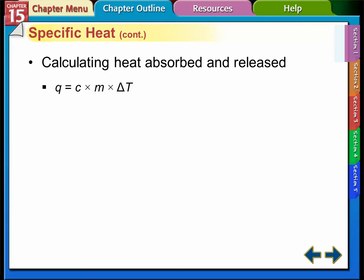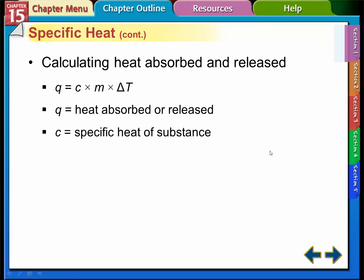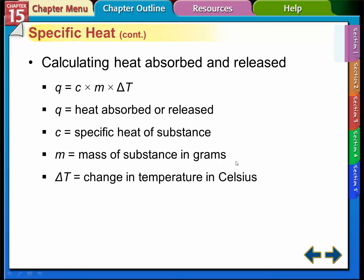The formula we use is Q = mcΔT, where these four variables are: Q is the heat absorbed or released; C is the specific heat of the substance; M is the mass, usually in grams; and ΔT is the change in temperature, usually measured in degrees Celsius.